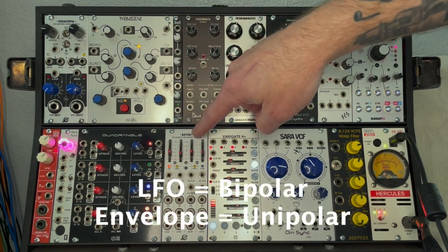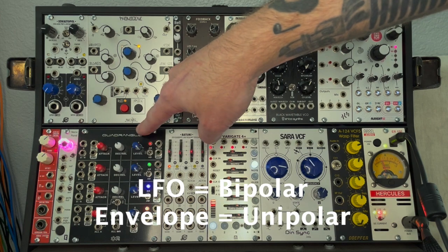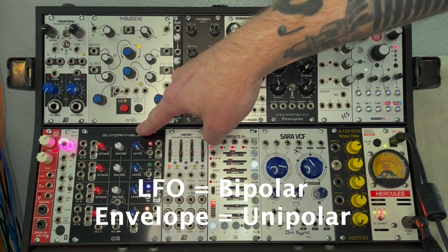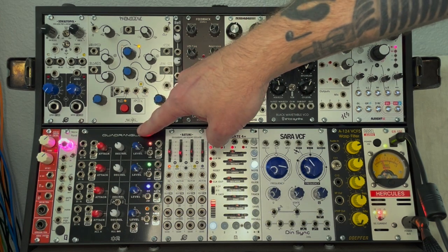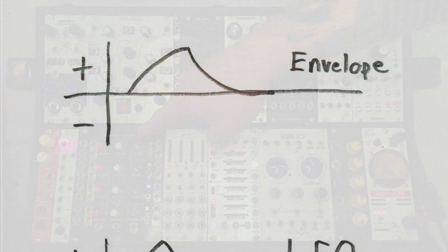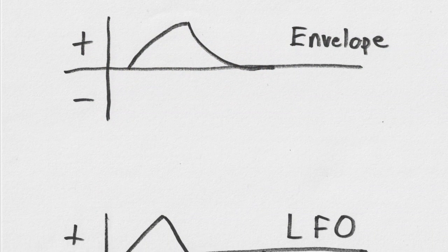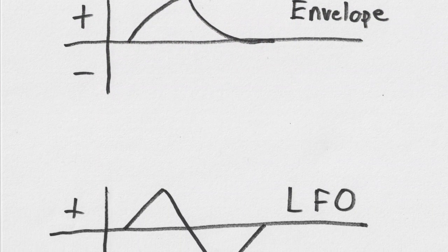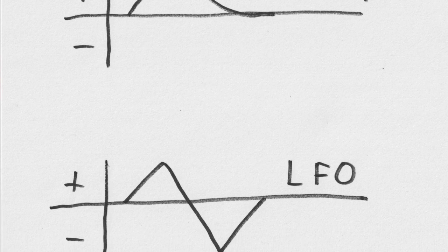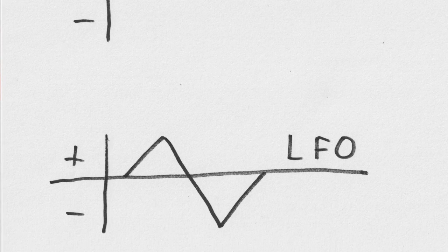An LFO is actually a bipolar voltage where an envelope generator is a unipolar voltage. So one cycle of an envelope generator goes from zero to max voltage and back to zero. One cycle of an LFO goes from zero to max voltage, back to zero, then to negative max voltage, and then back to zero.